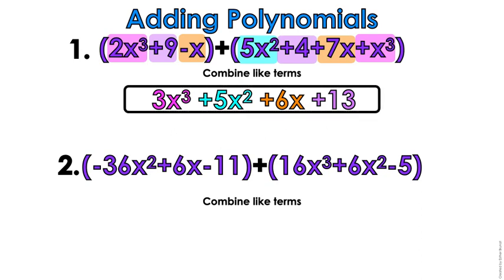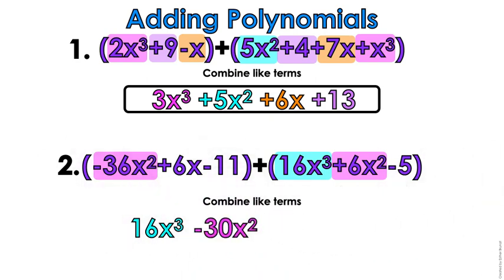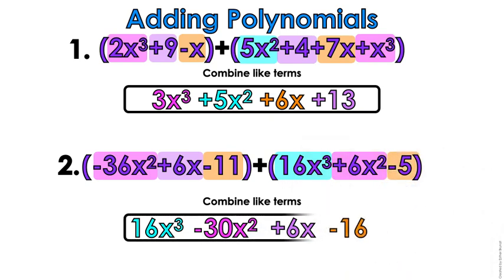So then we're going to do number 2 — we're going to combine like terms. We're going to look for our biggest variable first because it has to be in descending order. So we're going to put 16x-cubed up front. Then we look for the x-squares: we have negative 36x-squared and a positive 6x-squared, giving us negative 30x-squared. Then our linear term 6x comes right down. Our constants negative 11 and negative 5 give us negative 16. You did 2 out of your 10 examples!